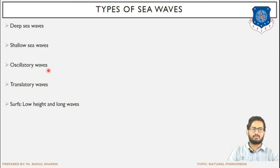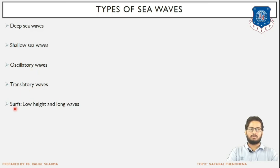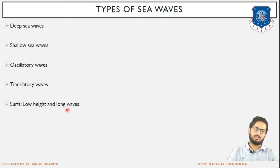For example, a pendulum exhibits oscillatory motion — the range of movement is fixed. Similarly, oscillatory waves only have motion within a specific minimal range, while translatory waves propagate over a longer distance. Next are surfs, which we have studied in the beach profile — that is the surf zone. Surfs are basically waves which have low height and a wavelength greater than the height, on which surfing can be done.